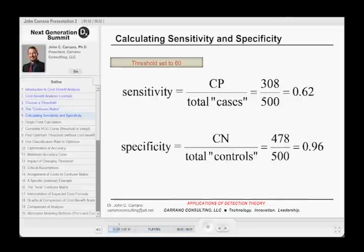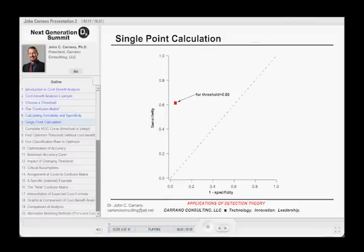So now I can calculate a sensitivity and a specificity, just at this arbitrary threshold that I set at 60. That was my arbitrary value for the threshold. And I get a sensitivity of 62 percent, a specificity of 96 percent. And that is one sensitivity-specificity pair, which gives us one point on the ROC curve, one spot on the ROC curve.